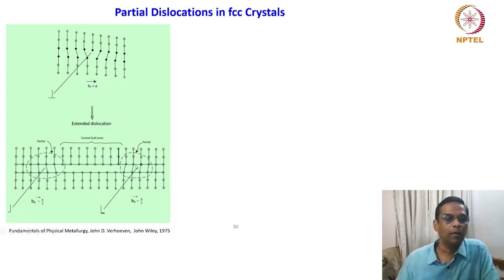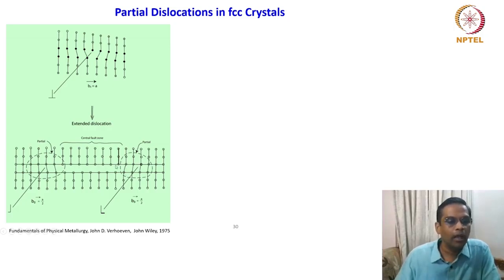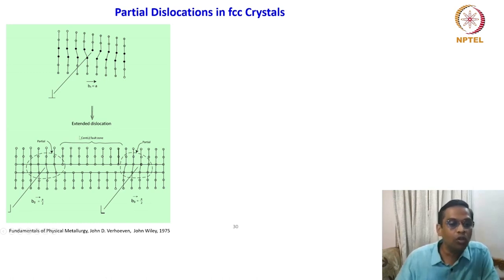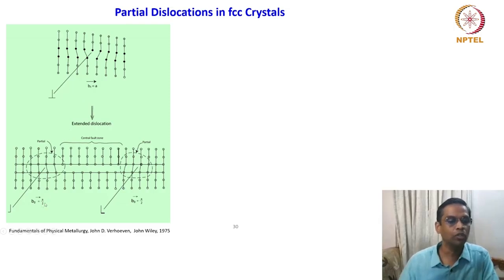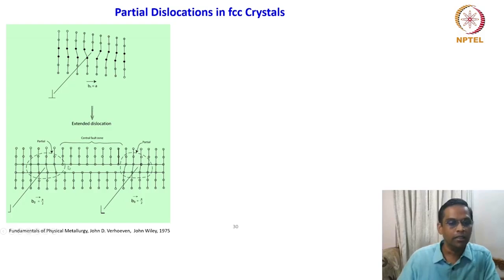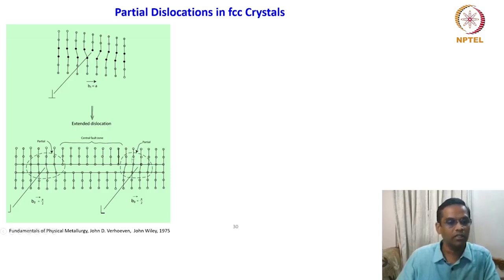Because of a small movement or displacement in the lattice position, it gets distorted locally, and this influences the neighbouring atoms. That decides the fault zone. This is a side view that gives a very nice idea. The unit dislocation decomposes into two partial dislocations — each A/2. These two dislocations influence the interatomic distance in a finite area called the central fault zone. We will see that in a moment — the fault region, stacking fault, and so on.